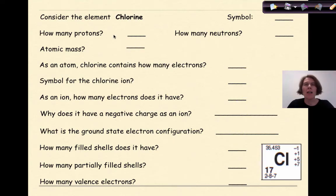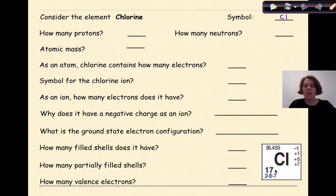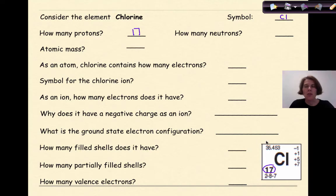Now let's talk about a non-metal. Consider the element chlorine — symbol Cl. How many protons does it contain? The atomic number is 17, so we have 17 protons. What is the atomic mass? It's 35.4, so rounding to the nearest whole number, the atomic mass is 35.